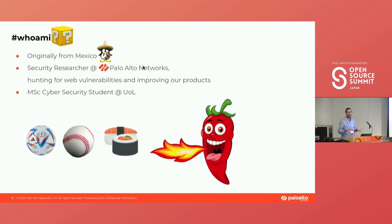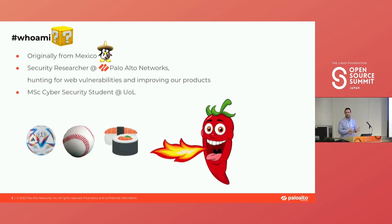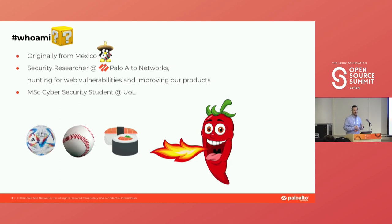First of all, you don't know me, so who am I? I am Leo Joskiewicz — I'll try to pronounce my name. I'm originally from Mexico. I'm a security researcher at Palo Alto Networks, where we do a lot of fun hunting for web vulnerabilities and try to improve our products as well. I'm also a student in MSc Cybersecurity at the University of London.